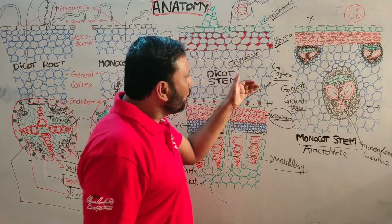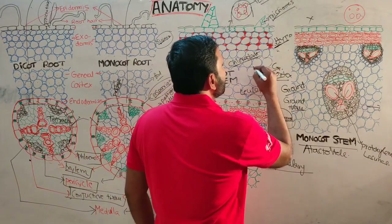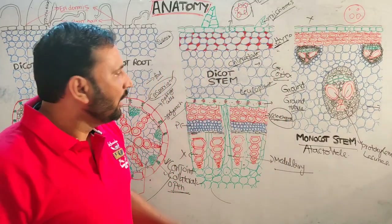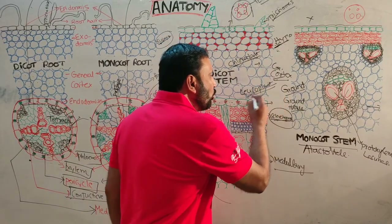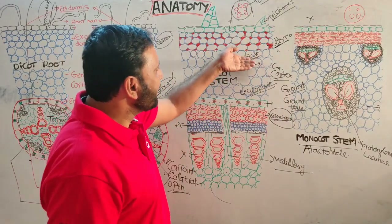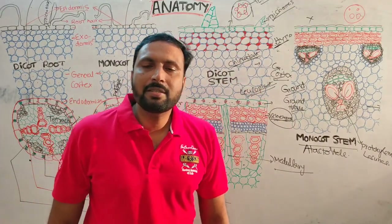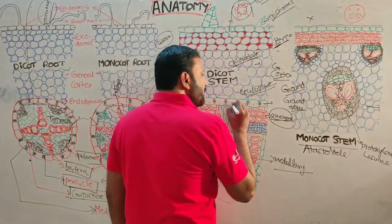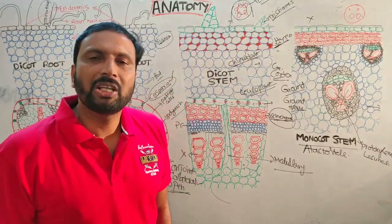In the general cortex, outer layers contain chloroplasts for photosynthesis, while inner rows contain leucoplasts for food storage. The innermost layer of the cortex is the endodermis. In the dicot stem endodermis, starch is present, so it is called the starch sheath.